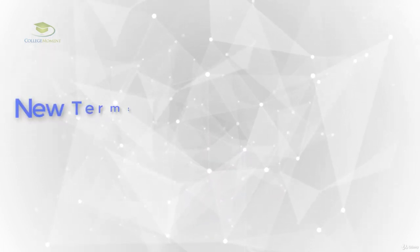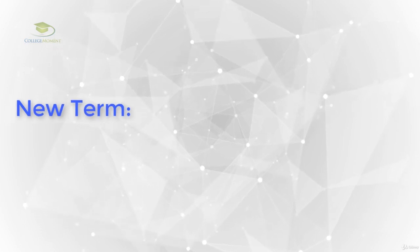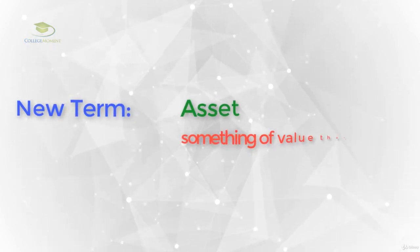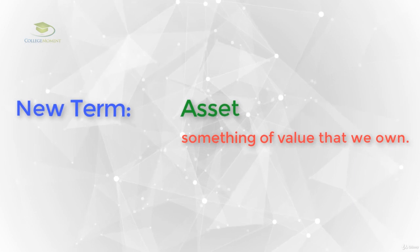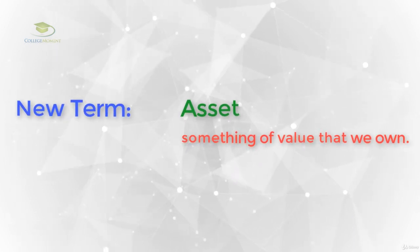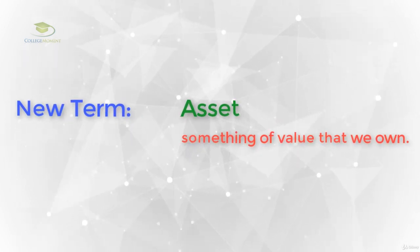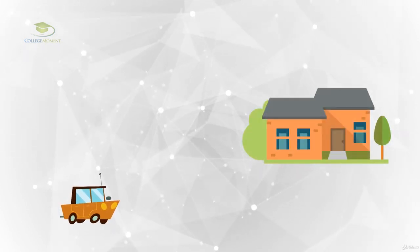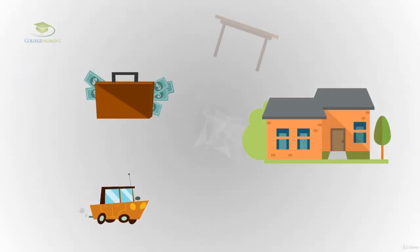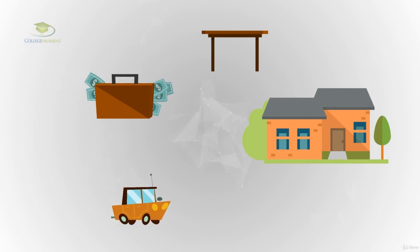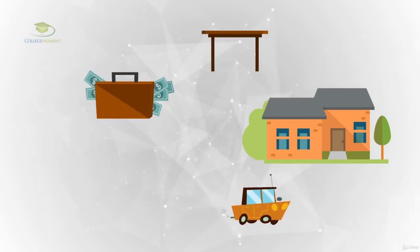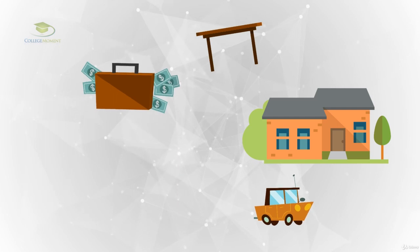Let me introduce you to a new term. The new term is an asset. An asset is something of value that we own. Can you give me examples of things that have value? How about a car? A house? Cash? Equipment? These are all assets — they are something of value that we own.